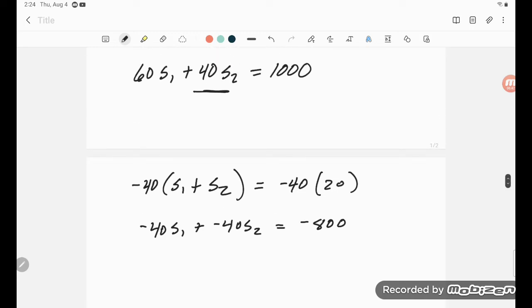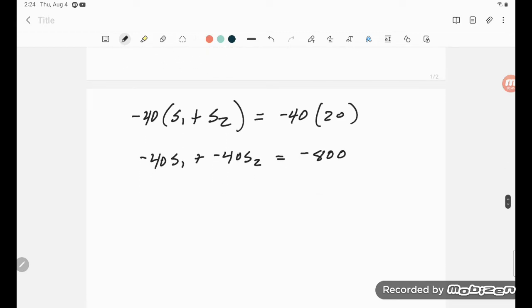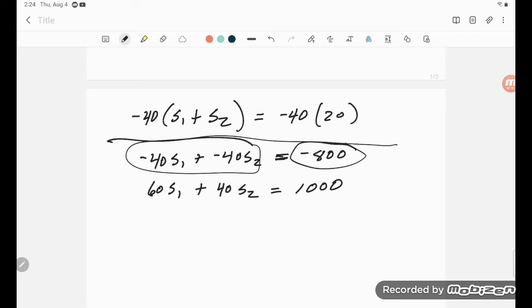And that makes minus 40 S1 plus minus 40 S2 equals minus 800. Now I'm going to rewrite that equation. So 60 S1 plus 40 S2 equals 1,000. And now notice that if I just look at these two equations, an equation says that this side is equal to that side. So this side up here is minus 800. This side over here is also minus 800. And I can add minus 800 to both sides of this equation.